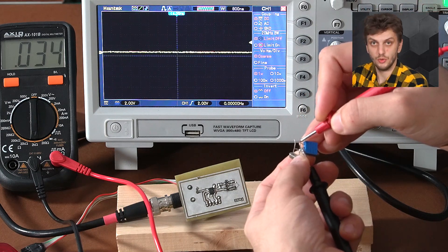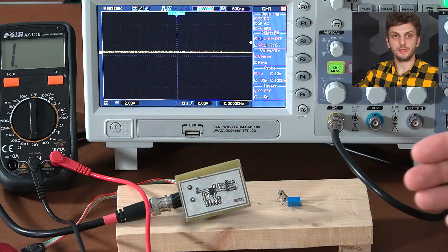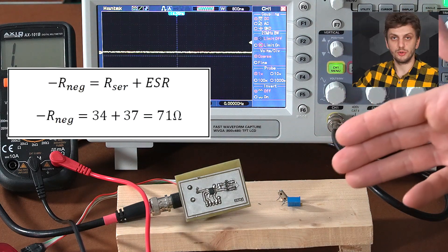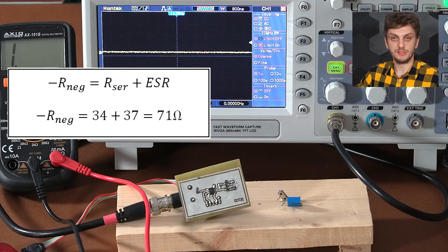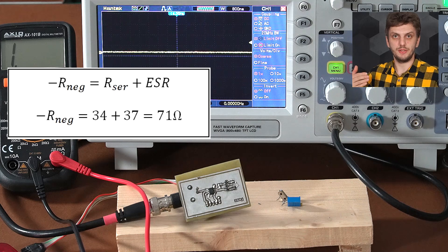So only 34 ohms. So with this particular crystal, we've added 34 ohms to the already existing ESR of 37 ohms, giving us a total negative resistance of 71 ohms.